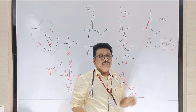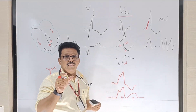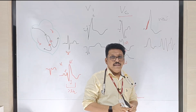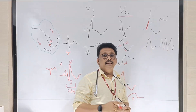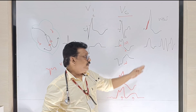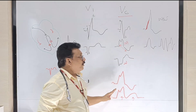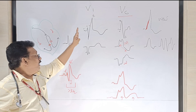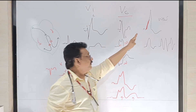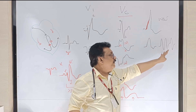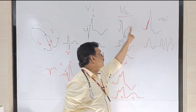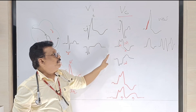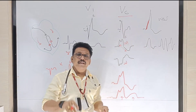When a single ventricular complex is wide, you call it a ventricular ectopic. When more than three consecutive complexes are wide, it becomes ventricular tachycardia. So the three important causes of wide QRS complex are: RBBB, LBBB, and WPW syndrome — plus VT, which we will discuss in detail in another class.